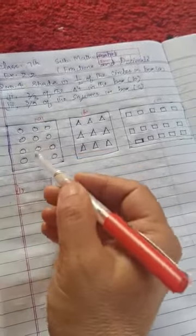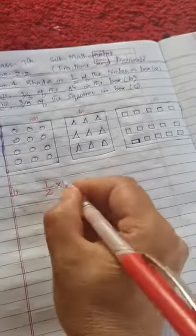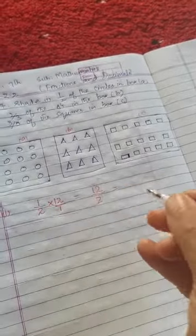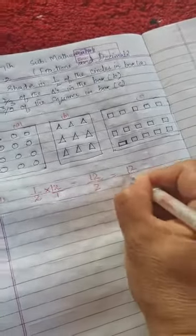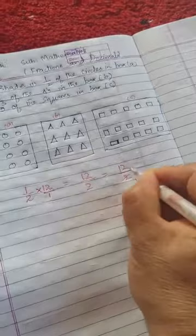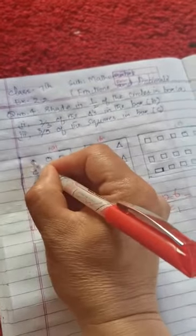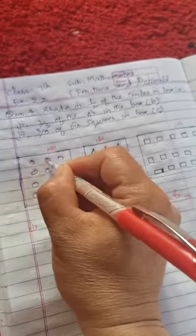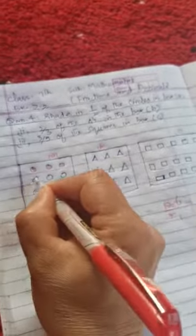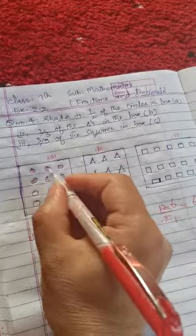Counting: one, two, three, four, five, six, seven, eight, nine, ten, eleven, twelve. There are twelve circles. The denominator is twelve. One upon two, one times twelve is twelve. Using two times table: two times one is two, two times six is twelve. Cut and we get six circles to shade.